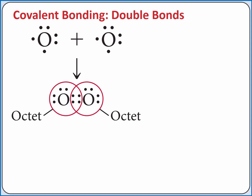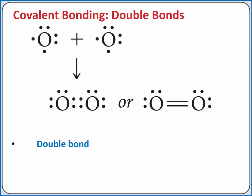and both will have a complete octet. When two atoms share four electrons, a double bond forms. Double bonds can be represented as two lines.